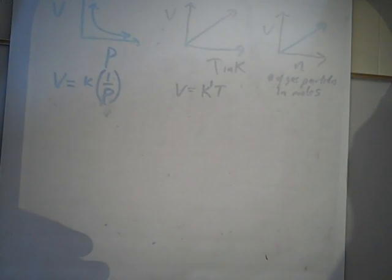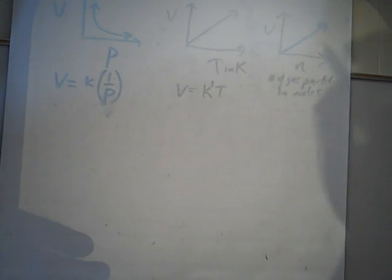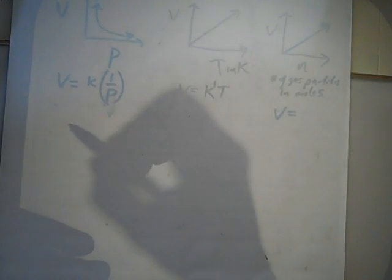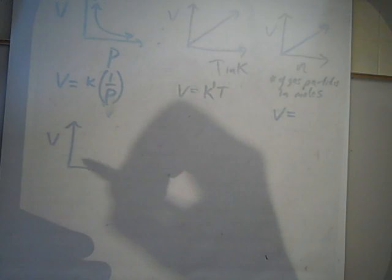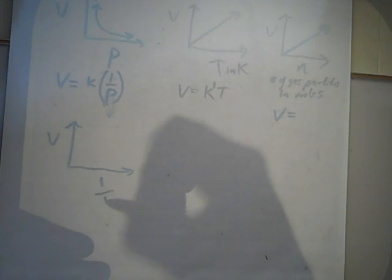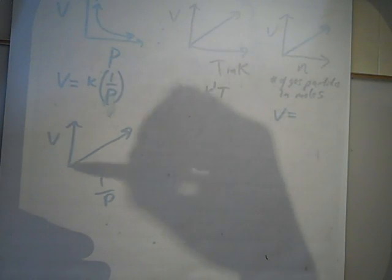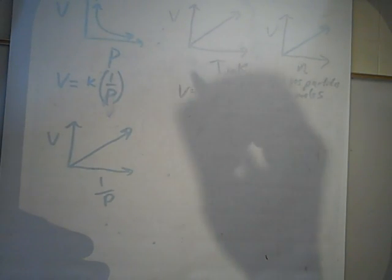Question: in Boyle's Law, why is it 1 over pressure? If you graph 1 over P, it becomes linear. To turn an inverse graph into a linear graph, you graph one over it.